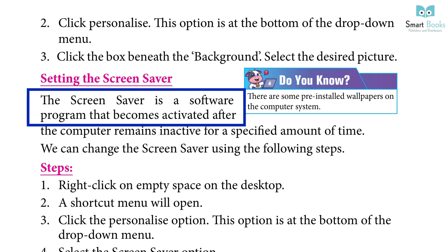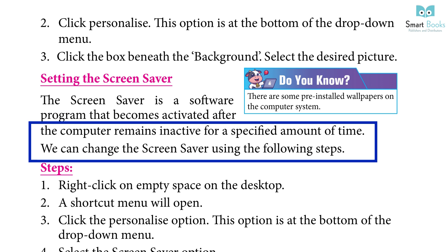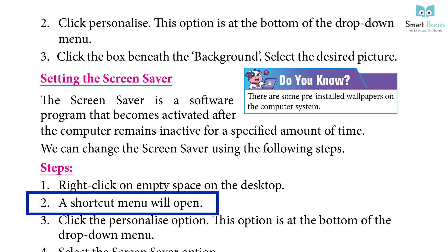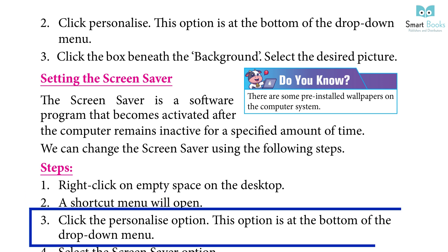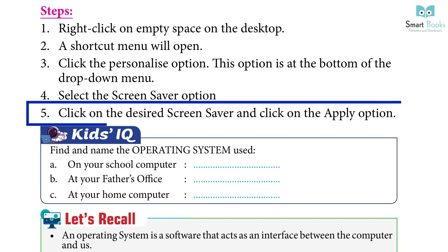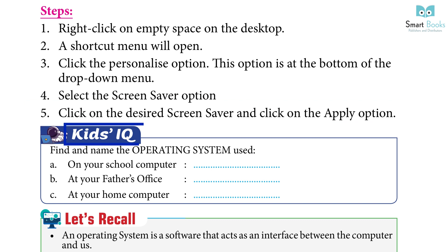Setting the Screen Saver: The screen saver is a software program that becomes activated after the computer remains inactive for a specified amount of time. Steps to change the screen saver: Step 1 — right-click on empty space on the desktop. Step 2 — a shortcut menu will open. Step 3 — click the Personalize option at the bottom of the drop-down menu. Step 4 — select the Screen Saver option. Step 5 — click on the desired screen saver, then click Apply.